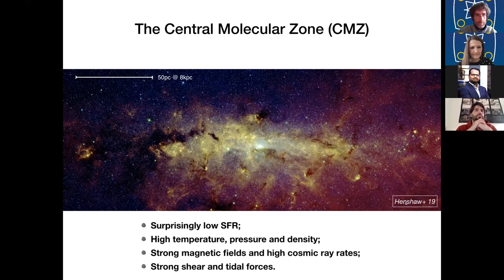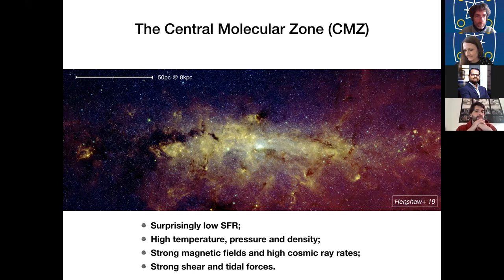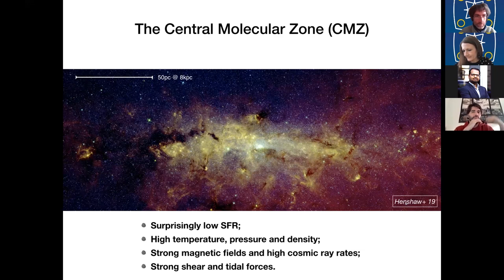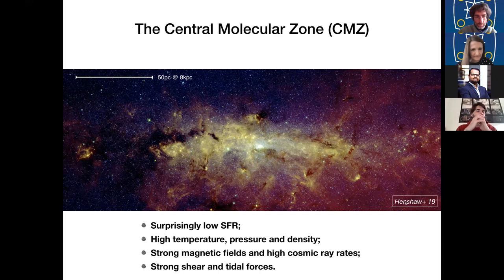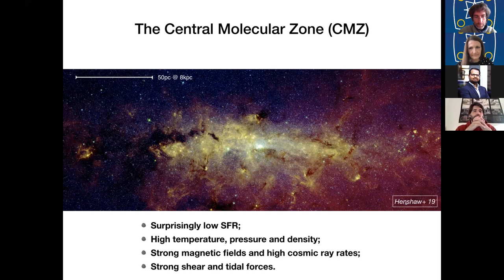For example, in this region we have higher temperatures, pressure and densities than in the solar neighborhood clouds and in the disk altogether. We also have strong magnetic fields and high rates of cosmic rays. And on top of that, the galactic potential within this region is quite steep, which means that it drives strong shear and tidal forces that these clouds are subjected to.